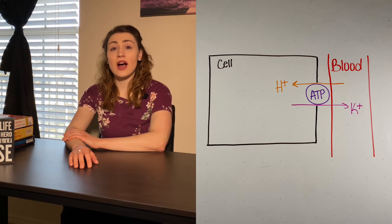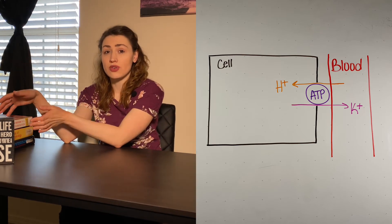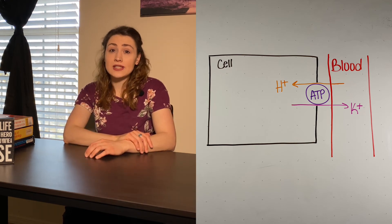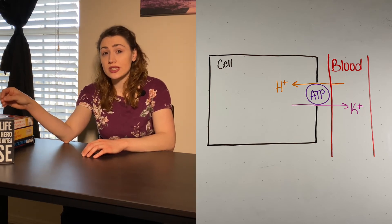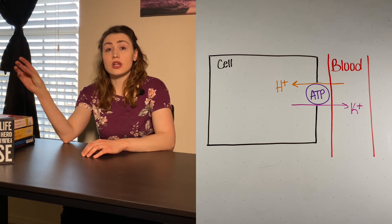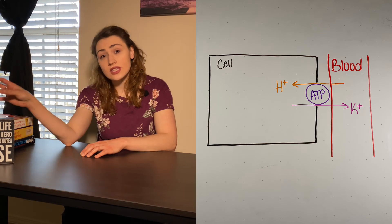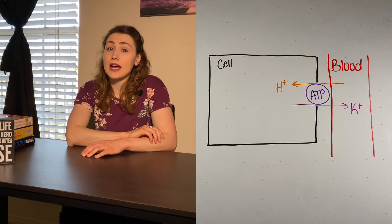Acidosis can also cause potassium to shift out of cells. In an acidosis, we have high hydrogen ions in the blood. The body tries to compensate by moving hydrogen ions from the blood into the cell via the potassium-hydrogen pump. Because this pump moves hydrogen and potassium in opposite directions, when the body moves hydrogen ions into the cell, it takes potassium ions out of the cell and moves them to the bloodstream, increasing blood potassium levels.